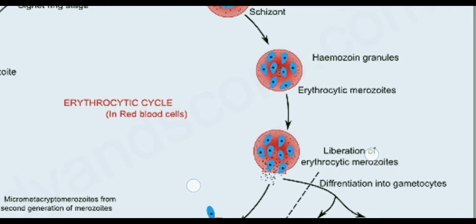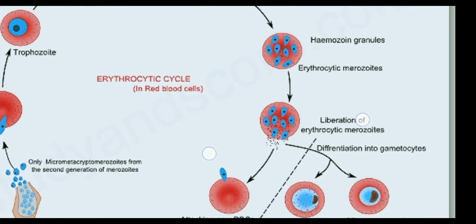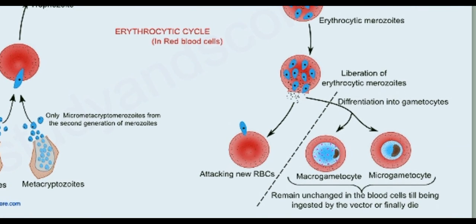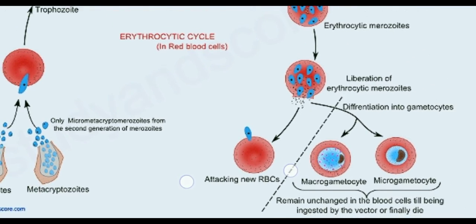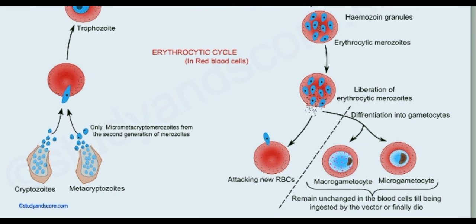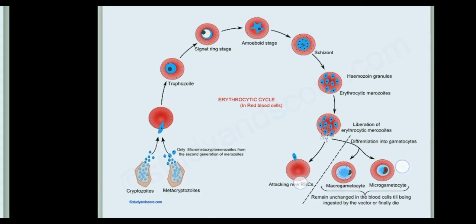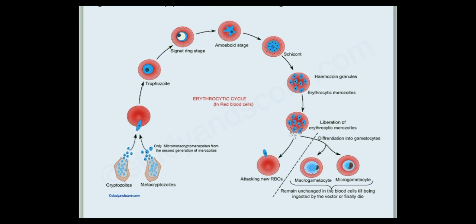At last, merozoites are released from the cell. Some attack new RBCs and repeat the process, while others differentiate into macro gametocytes and micro gametocytes. These structures participate in sexual reproduction in the female Anopheles mosquito's gut.